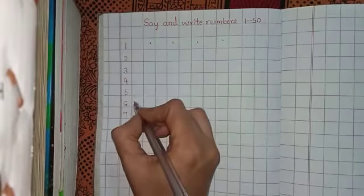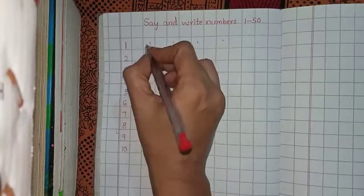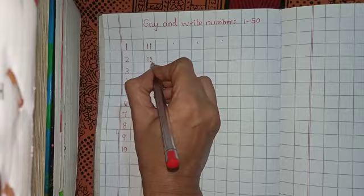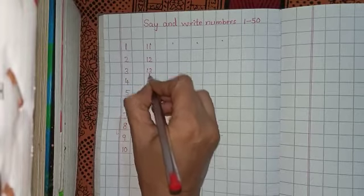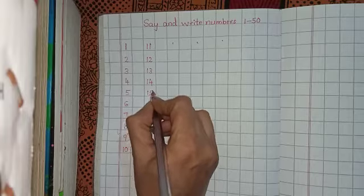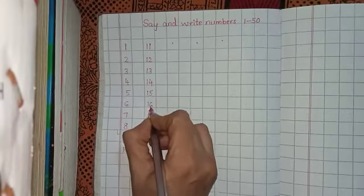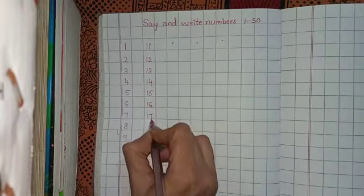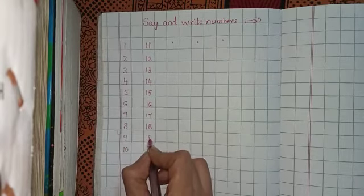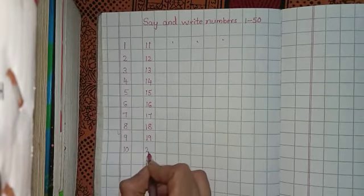After that you should leave one line and here you should write 11, 11, 12, 13, 14, 15, 16, 17, 18, 19, 20.